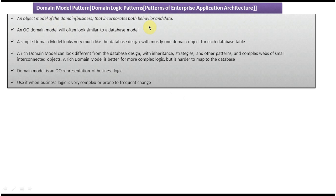The explanation of Domain Model is: an object model of the domain that incorporates both the behavior and data, or an object model of the business that incorporates both behavior and data.